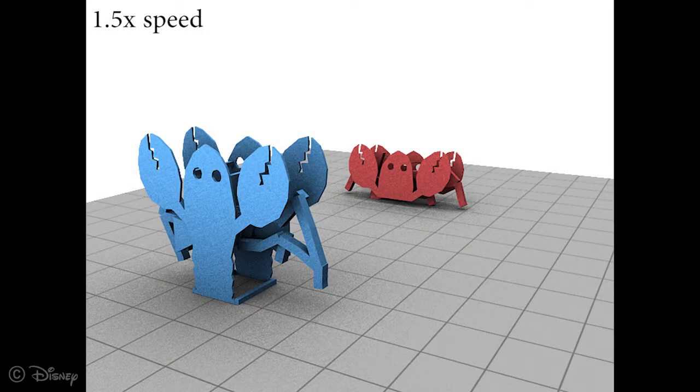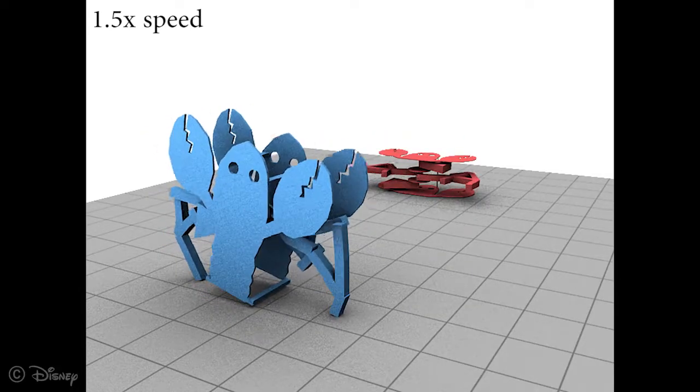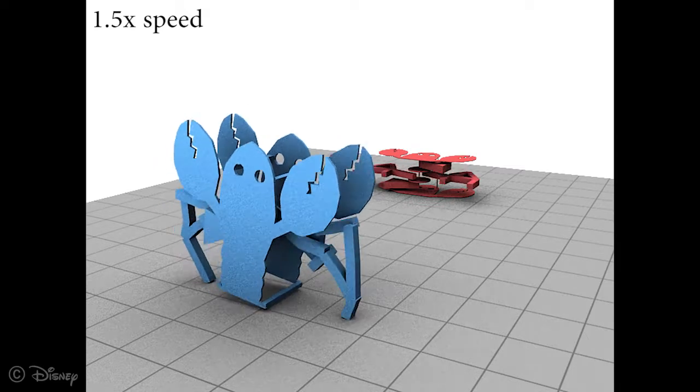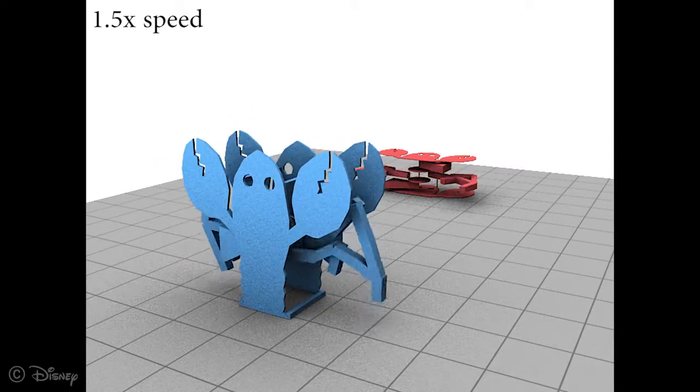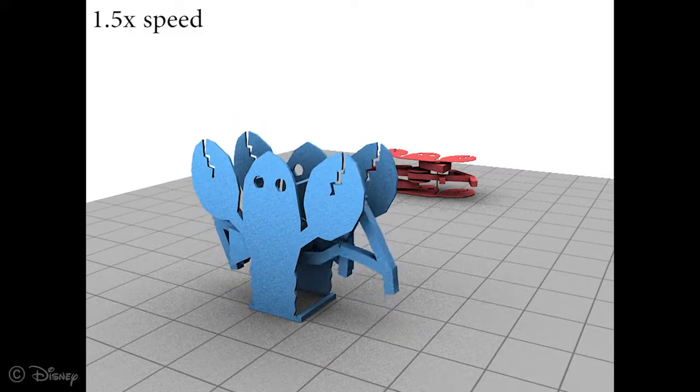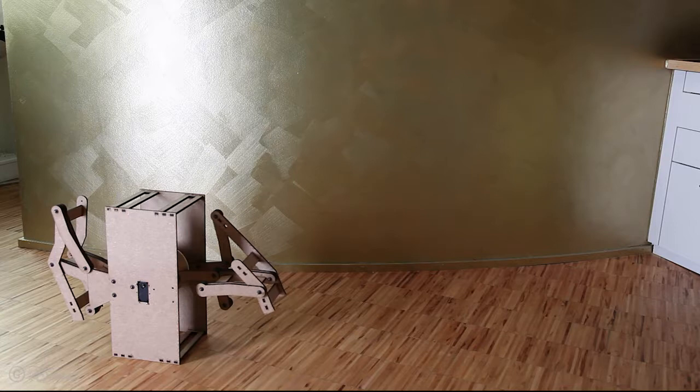For the lobster, we start with two legs, but the initial version again fails. Our optimized version uses its body as a third leg to support itself during the walking motion. The fabricated version again agrees with our simulation results.